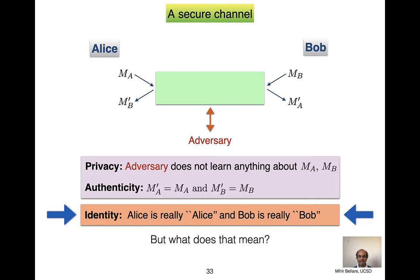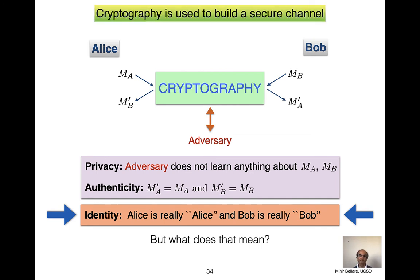So identity becomes an added element of what a secure channel should embody — some kind of guarantee that when Bob is performing this communication and receiving messages, he's assured they come from someone whose identity he sees as being Alice. And Alice is bound to this identity in some way, and vice versa, possibly. We will have to get into what these kinds of things mean.